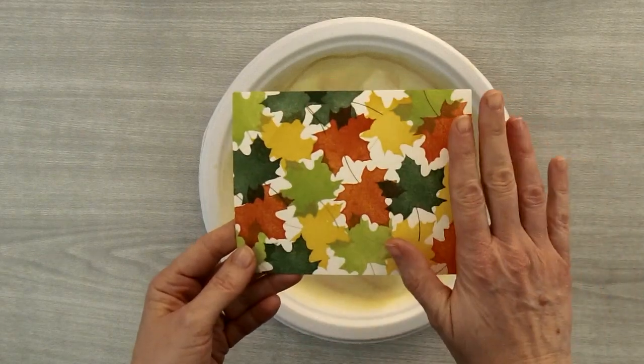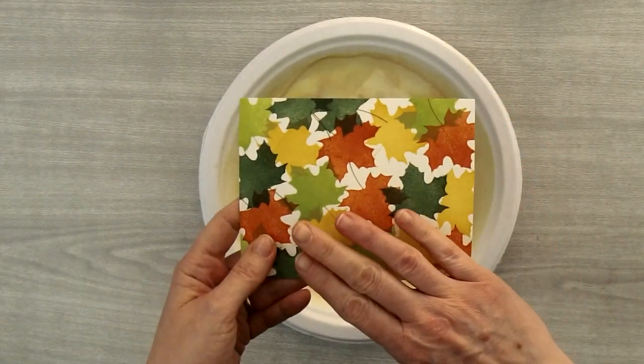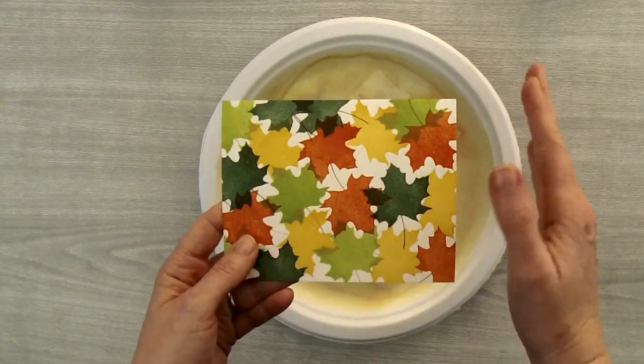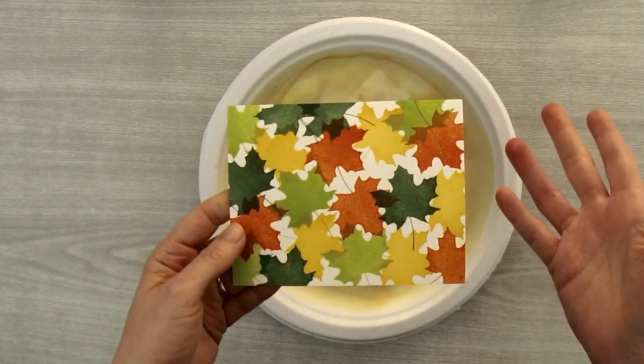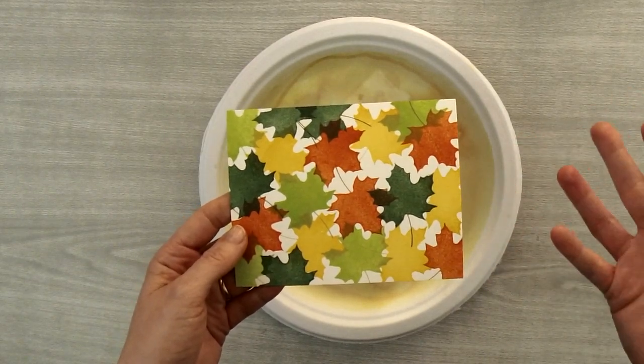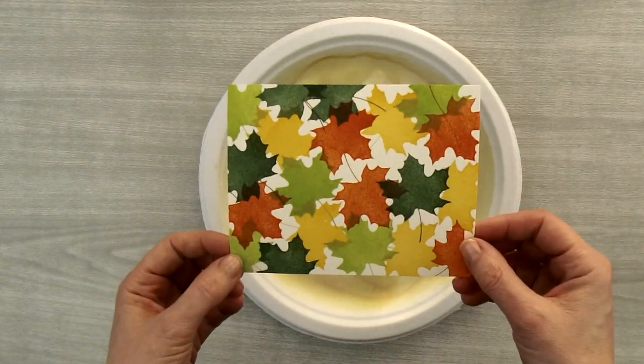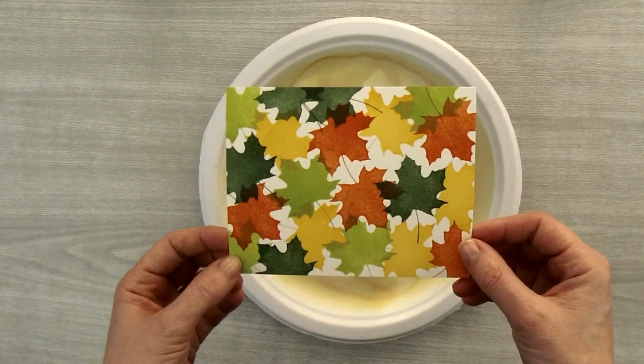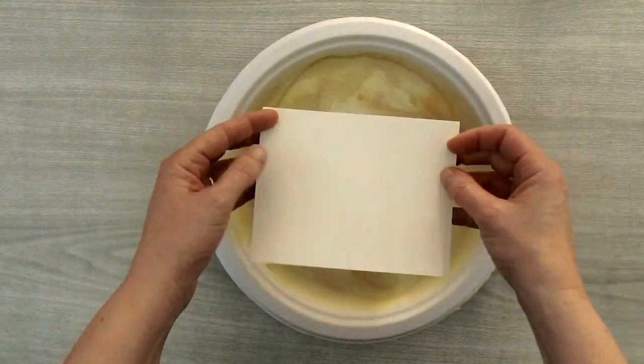And the reason we're going to do that is if we only spritz the front side of this paper it's going to expand and stretch and it's going to warp the paper. So we want to spray it on both sides so both sides get equally wet and stretched. That way the two wet surfaces will cancel each other out and the cardstock will still lay flat.